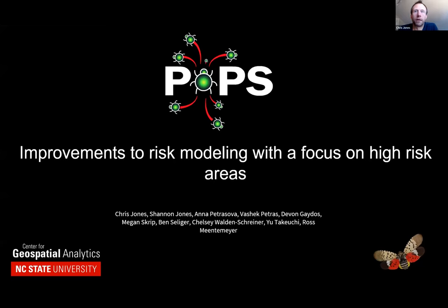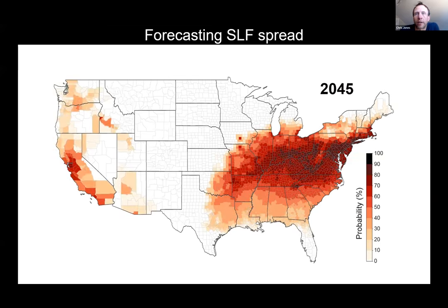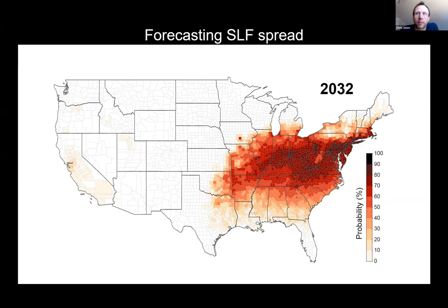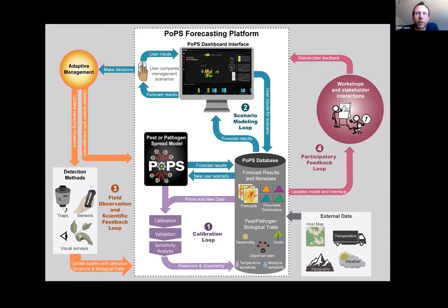Good afternoon. I'm Chris Jones, a research professor at NC State Center for Geospatial Analytics. Today I'm talking about work on iterative forecasting — improving model accuracy for spotted lanternfly forecasts. This is a map of forecasted spotted lanternfly spread to 2050 based on 2019 detection data. It's a county-level aggregate of mean probability of detecting spotted lanternfly. Today I'll give updates to that model and discuss improvements over the past year. Specifically, this model now includes a network kernel that better captures long-distance dispersal. We break our forecasting platform into four iterative loops that work together to improve model performance and applicability for decision makers and stakeholders.